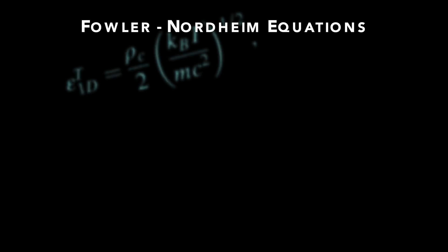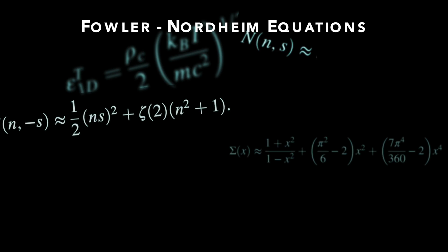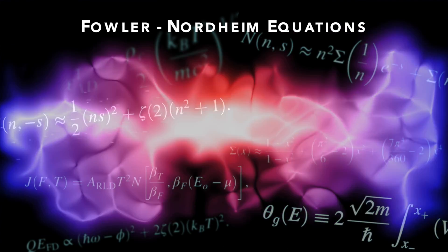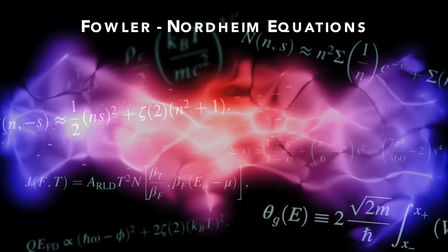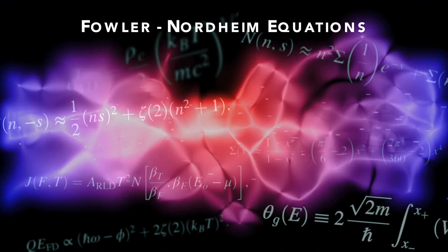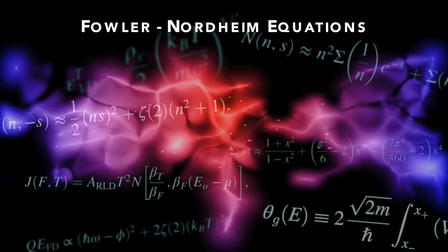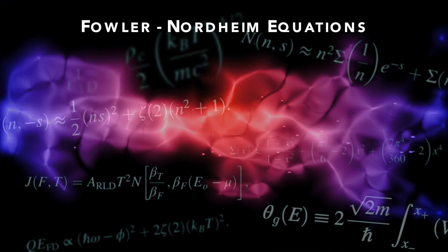Every physical quantity has got to have some equation that describes it, and field emitters are described by the Fowler-Nordheim equation. The Fowler-Nordheim equation will really tell us — if you have a plasma and put it in an electric field environment — how many electrons are going to come off that plasma.